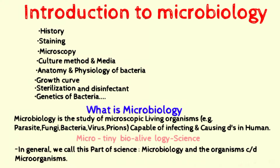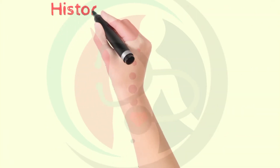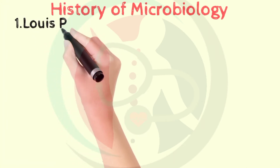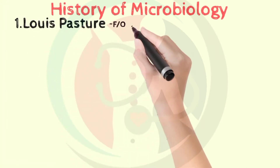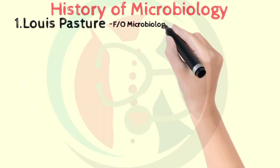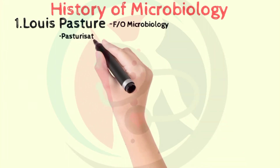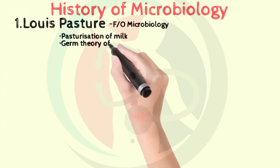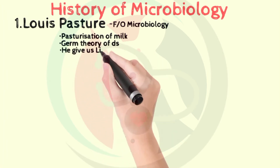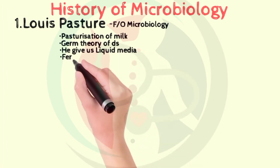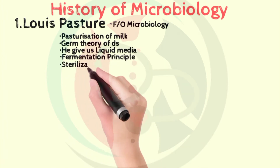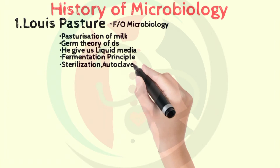In the history of microbiology, there are many scientists with great roles. The first scientist we will study is Louis Pasteur. He is known as the father of microbiology. He tells us about pasteurization of milk, germ theory of disease, and he gives us liquid media and fermentation principles. He also tells us about sterilization by autoclave and hot air. He also gives us vaccines like cholera, anthrax, and rabies.